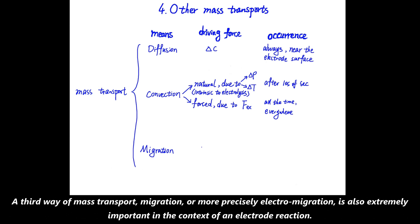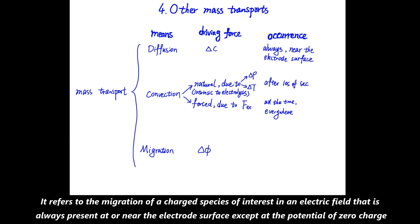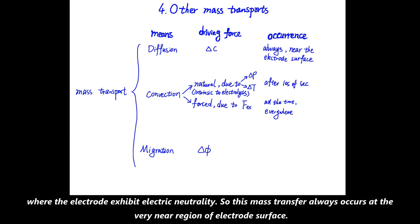A third way of mass transport, migration, or more precisely electron migration, is also extremely important in the context of an electrode reaction. It refers to the migration of a charged species of interest in an electric field that is always present at or near the electrode surface except at the potential of zero charge where the electrode exhibits electric neutrality. So this mass transfer always occurs at the very near region of the electrode surface.